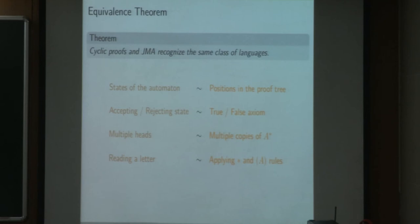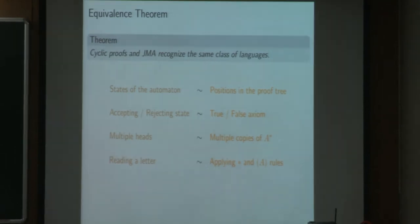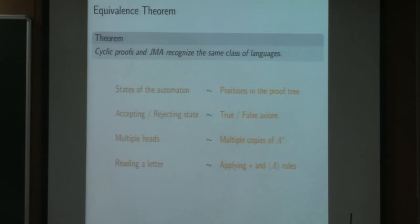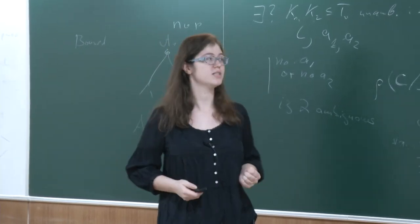And the main result we have is this equivalence theorem that says that the proof system recognizes exactly the same class of languages as this class of automata. There is an effective translation between both models. The idea is that a state of the automaton corresponds to a position in the tree. The accepting or rejecting states correspond to the true or false axioms. The fact that we have multiple heads corresponds to the fact that we can do contraction and duplicate the input in the proof. And when we read a letter and do a transition in the automaton, it corresponds to applying a star rule and then doing the disjunction of cases about which letter it is.